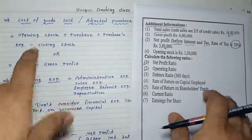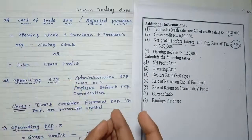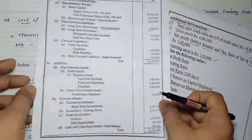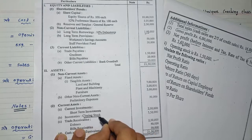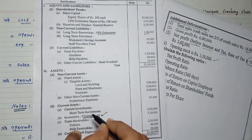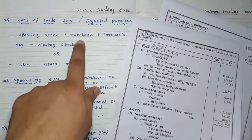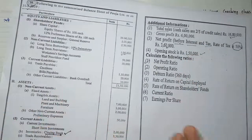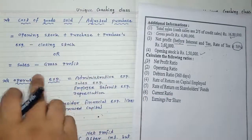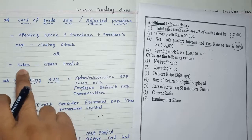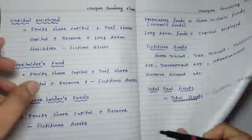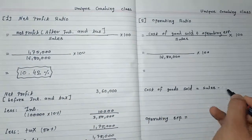Checking what information is available: we have opening stock and closing stock, but purchases are not given in the question or balance sheet. So we cannot apply formula one. We go with formula two — sales minus gross profit. We have both sales and gross profit: gross profit is 6,00,000 and sales is 16,18,000, so we apply the second formula.